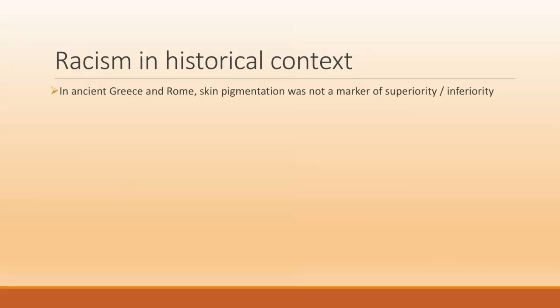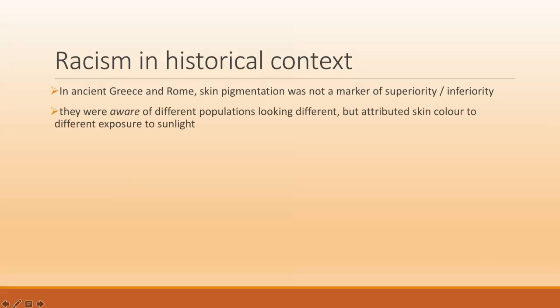When we look back at the ancient world, particularly ancient Greece and Rome, the color of one's skin was not seen as significant as a marker of one's superiority or inferiority. So they had no notion of discrimination based on skin color. They were aware of different populations looking different, and they were seeing people whose skin was darker, but they did not discriminate based on that. They instead attributed differences in skin color to different exposure to sunlight, which is actually scientifically true.